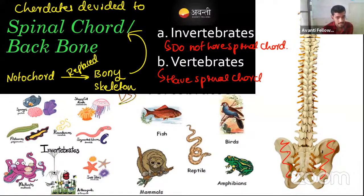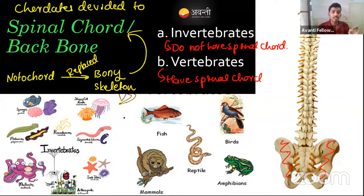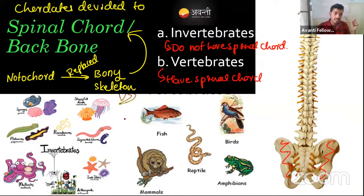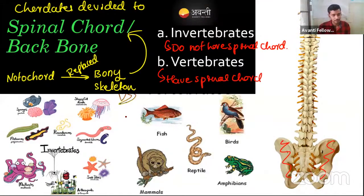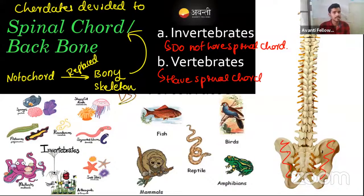Second question: in invertebrate chordates, the notochord varies — in some it remains throughout the lifetime, in some it is only in the tail region, in some only in the head region, and in some only in part of the life cycle. This is because it's an early stage in evolution and variation differs by organism. We will learn all this in later chapters.